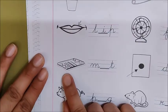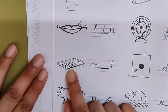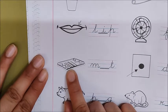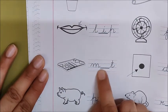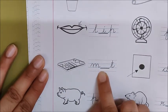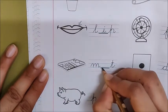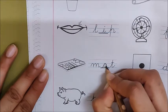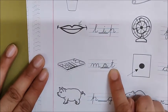What is this picture? Mat. Mat. Very good. Tell me the sounds. M. What will come here? There is a blank here. You have to fill it. M, a. Very good. The next sound is A. M-a-t mat. Very good.